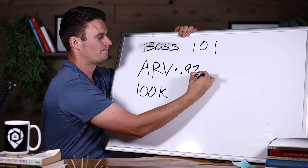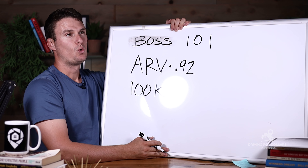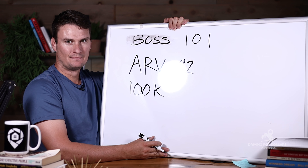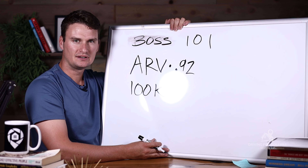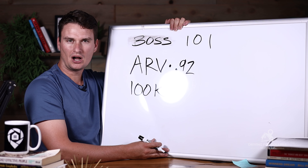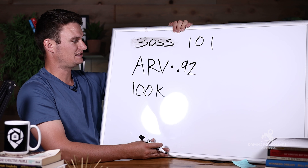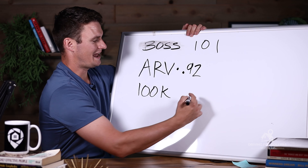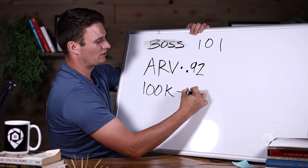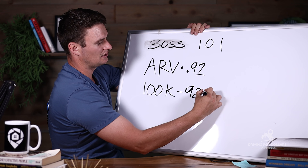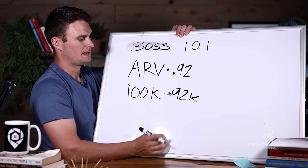You're going to multiply the ARV by 0.92. What that accounts for is, once someone buys it, fixes it up, and resells it, how much they're going to have to pay a real estate agent, money costs, and title fees — that gets rid of eight percent. So multiplying by 0.92 brings us down to $92,000.